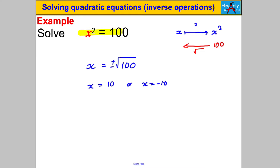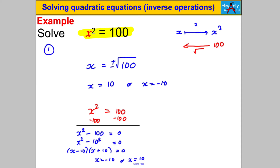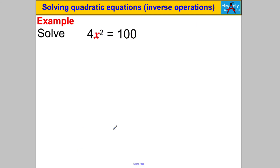Just to show you, I could also solve X² = 100 by factorizing: subtract 100 from both sides to get X² − 100 = 0. Since 100 = 10², this is a difference of two squares: (X − 10)(X + 10) = 0, giving X = 10 or X = −10 — the same answers. Both methods work, but inverse operations are easier.